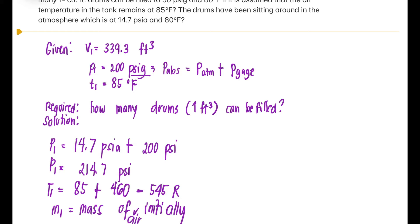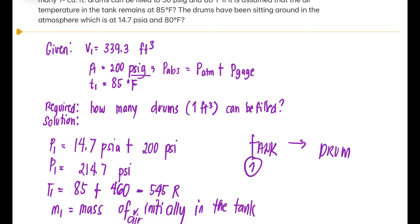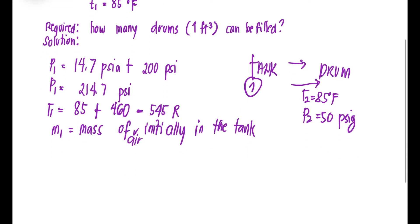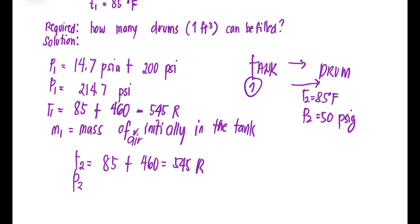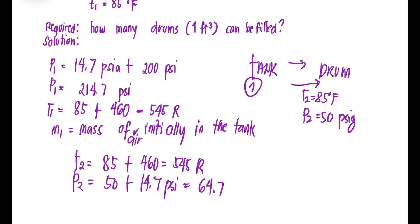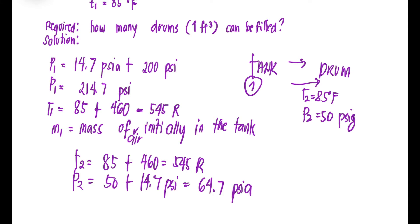We are transferring air from the tank to be filled into drums. When filling the tank, the temperature remains at 85 degrees Fahrenheit, and pressure at point 2 is given as 50 psi gauge. Temperature 2 is 85 plus 460, so it remains 545 Rankine. Pressure 2, converting from gauge: 50 plus 14.7 equals 64.7 psia.